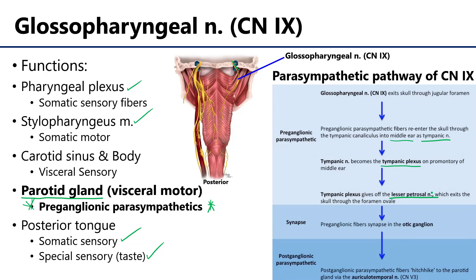Remember, there's also a greater petrosal. The greater petrosal is of cranial nerve seven, the facial nerve. The way I remember that is greater and facial rhyme — that long 'a' sound. So greater petrosal is of the facial nerve, and lesser petrosal is of the glossopharyngeal nerve.